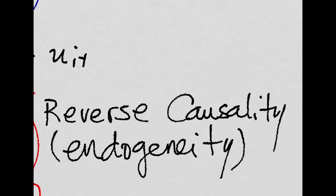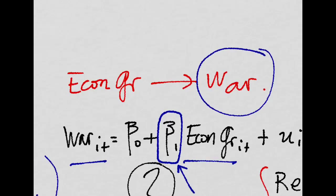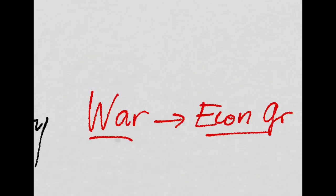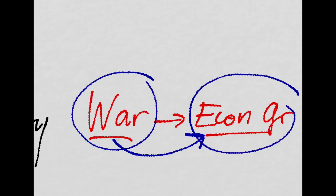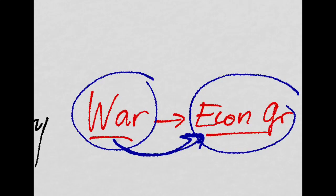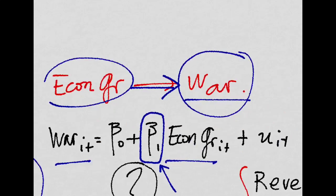The first problem is reverse causality, or how it's usually known, endogeneity. This basically means that the causality channel is not going from economic growth to war, but instead is going from conflict to economic growth. That is, in years where a country suffers a war, economic growth decreases, which is very possible. That means that there's a reverse feedback that would not allow us to establish causality.